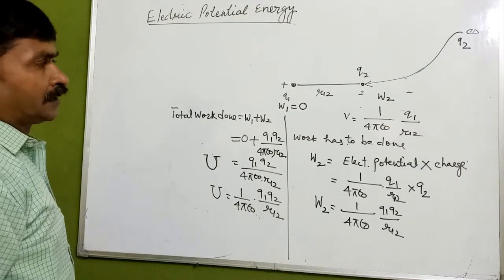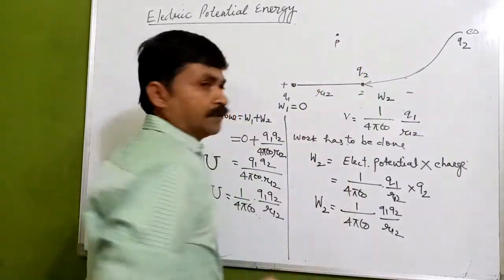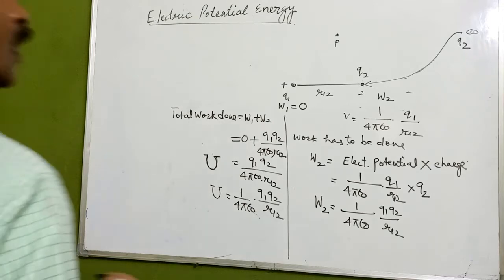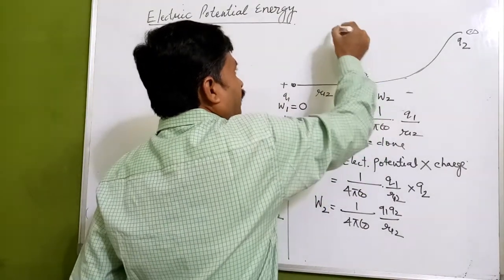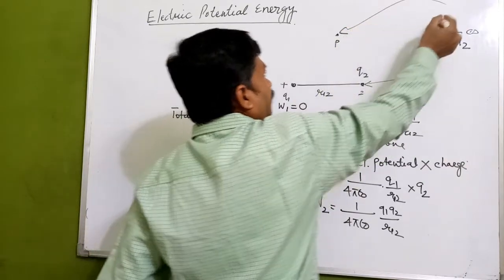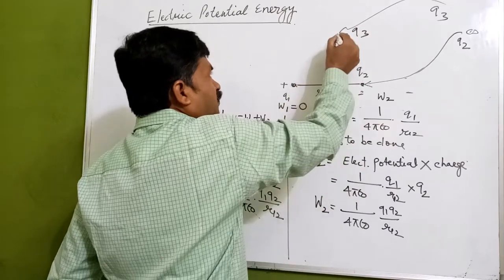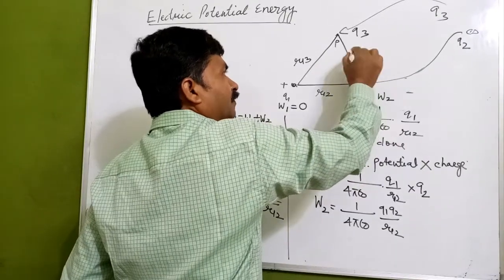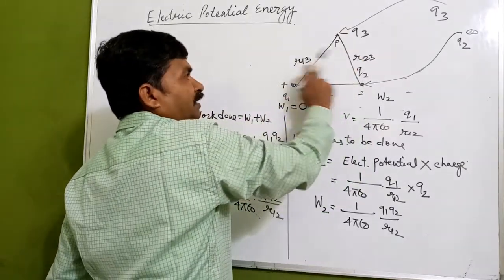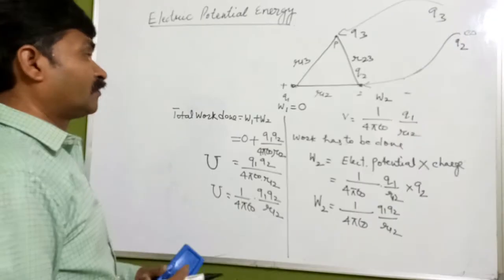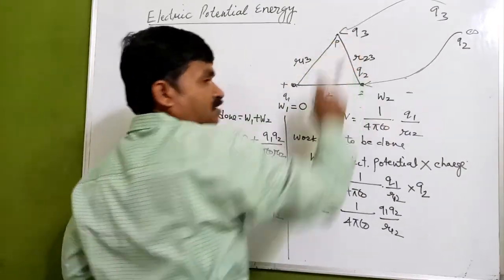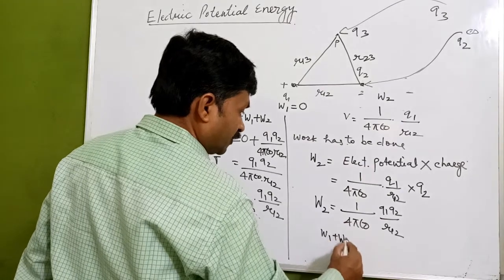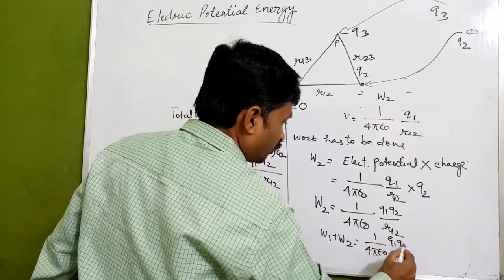Now we bring another charge q3 from infinity to a point P. The distance between q1 and q3 is r13, and between q2 and q3 is r23. We already have the work done W1 + W2 = (1/4πε₀) × q1q2/r12 from bringing the first two charges.